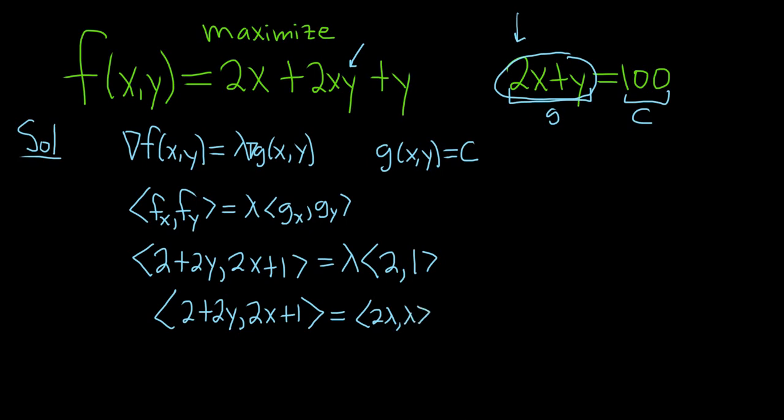So these vectors are equal when their components are equal, so we'll take 2 plus 2y and set that equal to 2 lambda, so 2 plus 2y is equal to 2 lambda. And then we'll take 2x plus 1 and set that equal to lambda, so 2x plus 1, and that's equal to lambda.